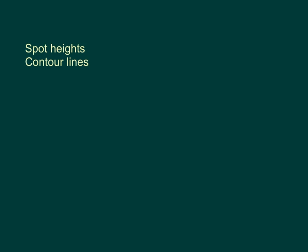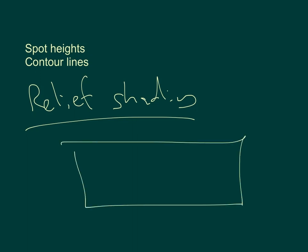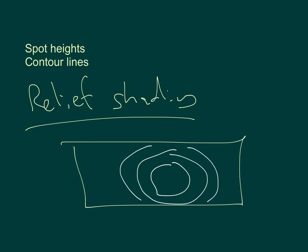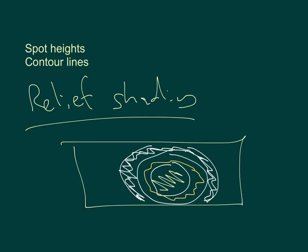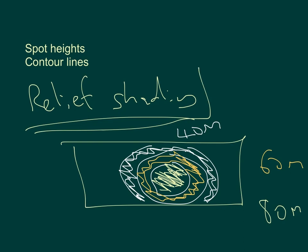Another technique we can talk about, which is pretty easy to work out, is relief shading. All that is, very simply, is when you make it even easier for the person reading the map by actually shading the contour line areas different colours. So for a map, we might make the inside area one colour, then the next band another colour. Everything in the white is say 40 metres, everything in the yellow — or deep mustard — is 60 metres, and everything in the pale yellow is 80 metres. That's relief shading — it's just a way that some maps make it as easy as possible to understand which height is which.